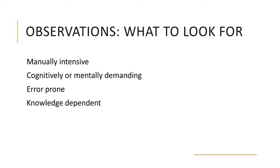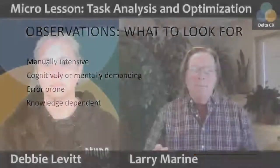The third thing to focus on is error-prone steps — where a lot of people seem to make a mistake, get frustrated, or have to correct themselves — because those are an opportunity to get the system to do something that removes that potential for error. The last one, I think, is the most critical: can you identify any knowledge dependencies? Are there tasks or steps where the user has to have specific knowledge in order to succeed?